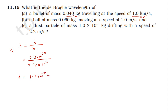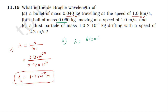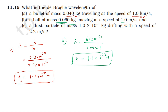So the first case is the bullet. For the second case, the ball of mass 0.06 kg: lambda equals h by momentum. h is 6.63 × 10⁻³⁴, divided by mass 0.06 and speed 1 meter per second. The answer is 1.1 × 10⁻³² meter.